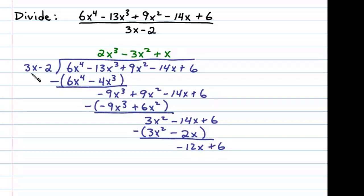Now we ask what times 3x is equal to negative 12x. We choose negative 4. Negative 4 times 3x is negative 12x, negative 4 times negative 2 is plus 8, after then we subtract.